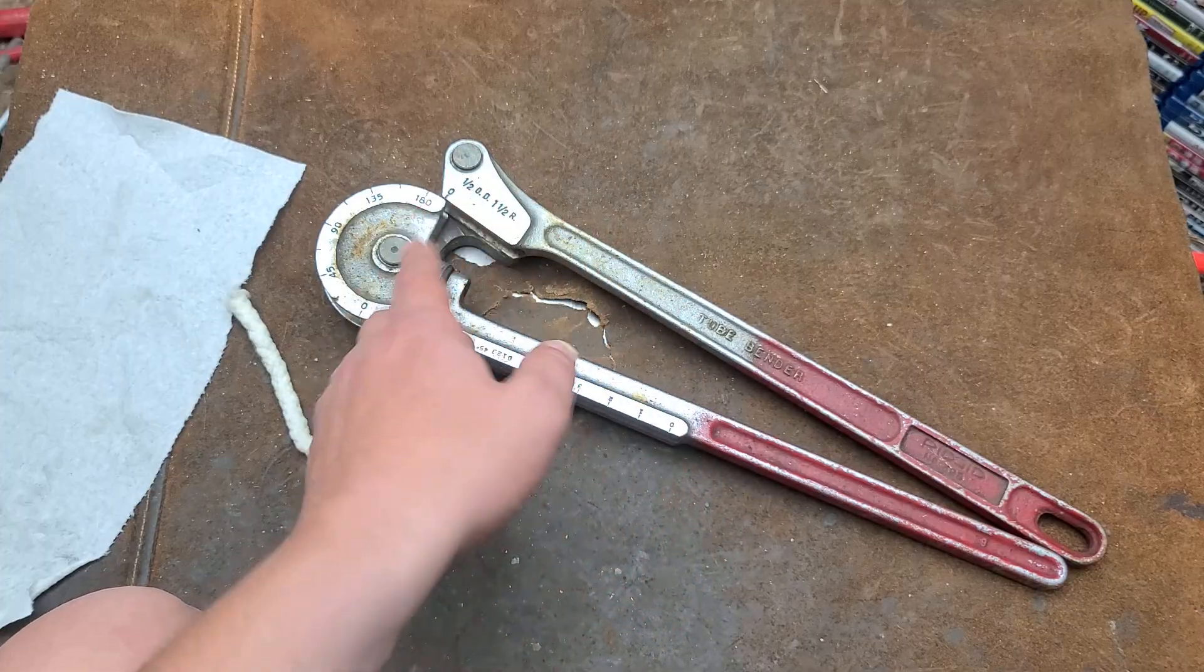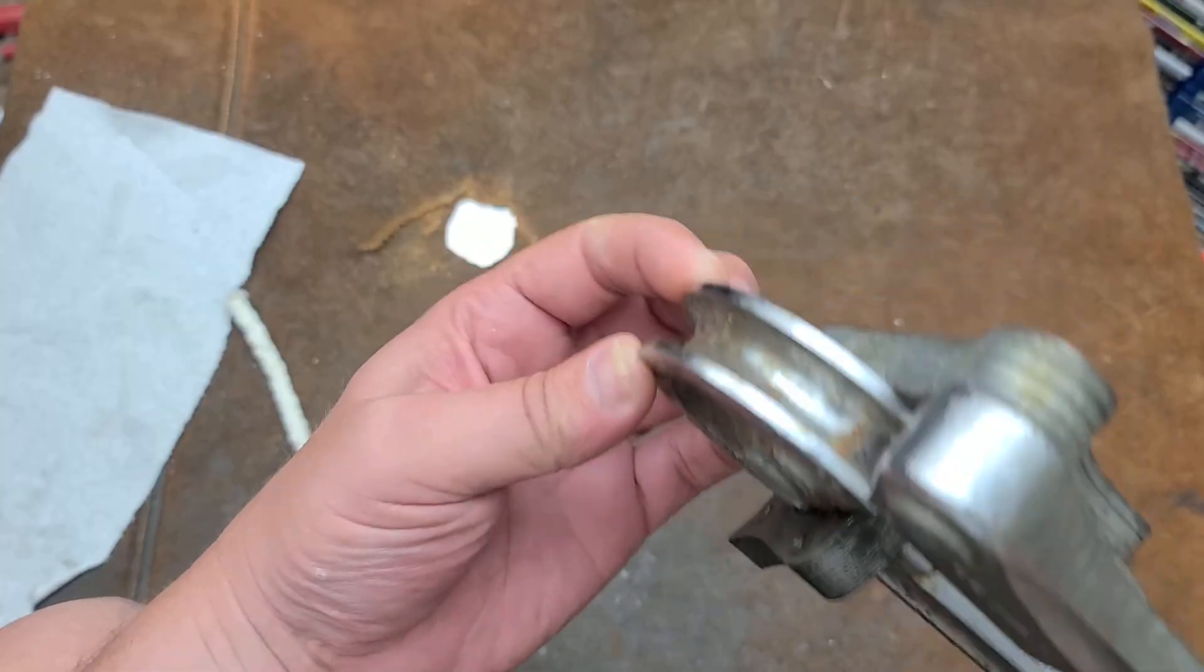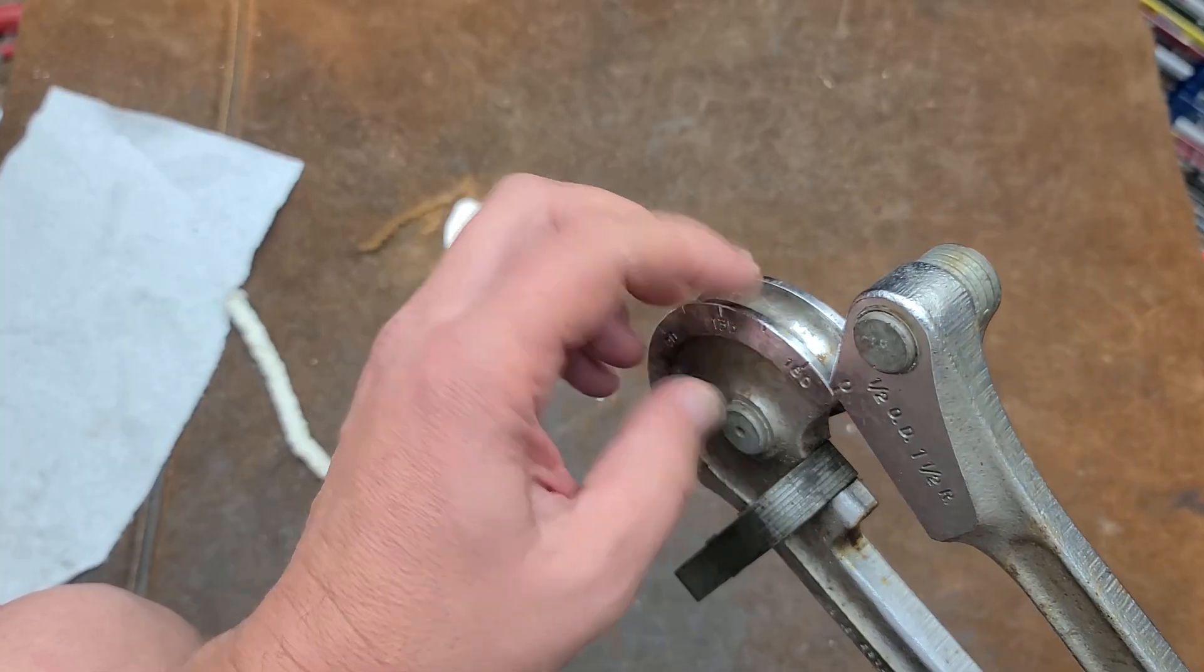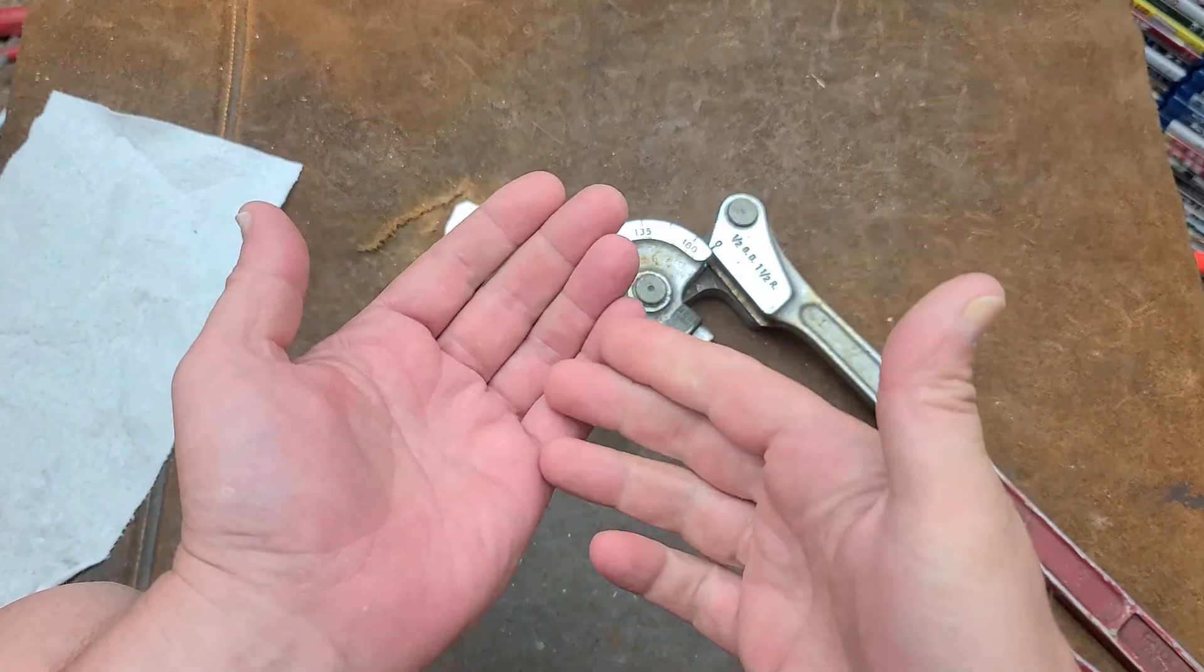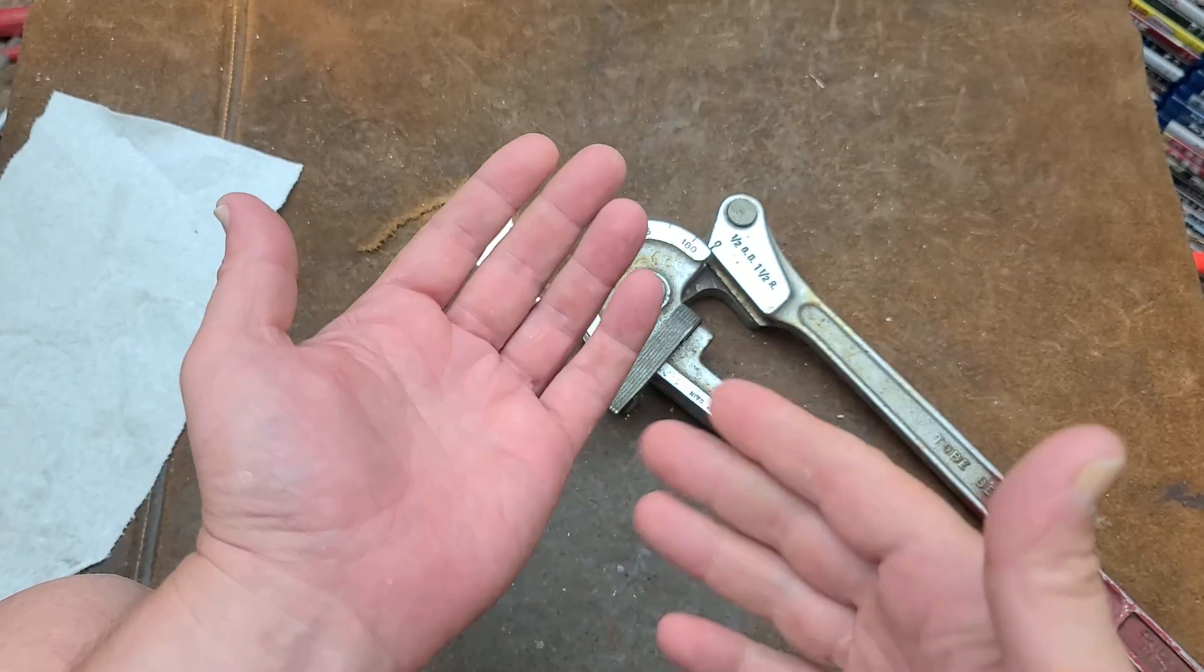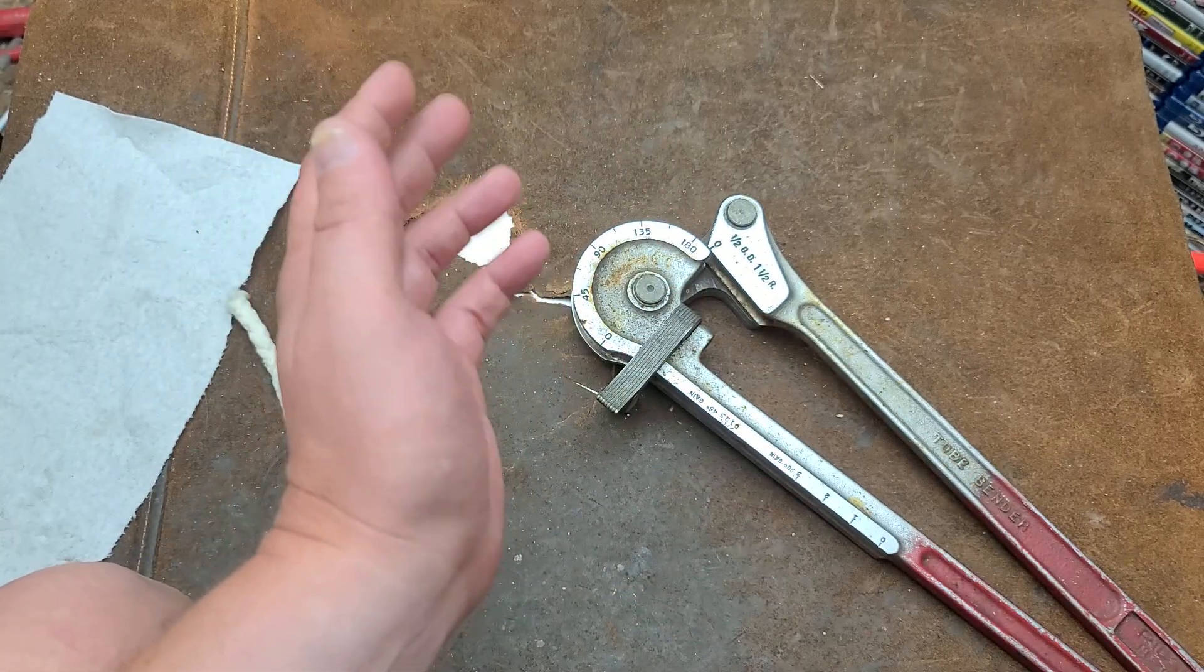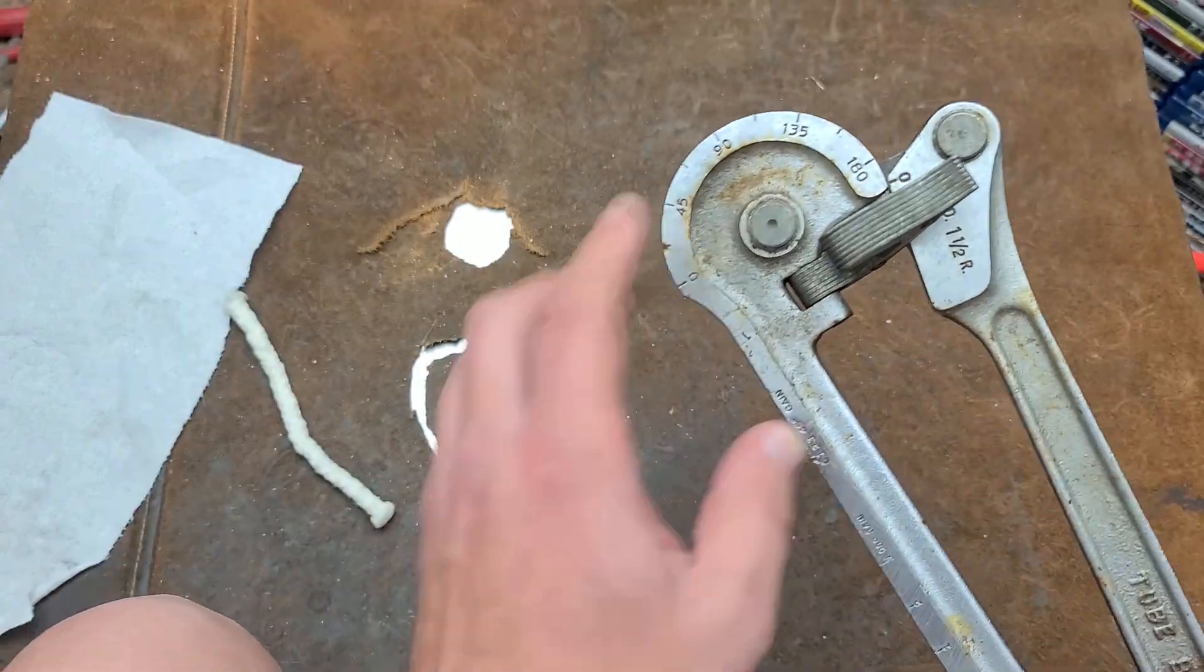Tubing benders tend to maintain a more uniform diameter. They're not mandrel benders, it isn't perfect. A mandrel bender actually has something that has to be inserted like a rattlesnake tail inside the tube. They're real specialized.